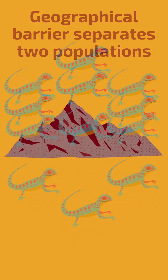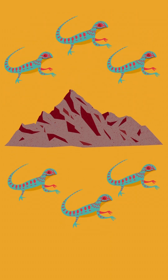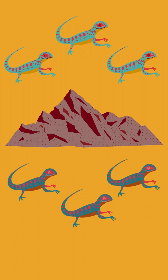The isolated population evolves independently until it's no longer able to breed with the original species, and a new species is formed.